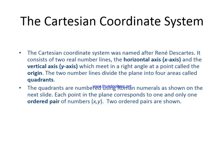The next topic is the Cartesian coordinate system, which was named after René Descartes. It consists of two real number lines: the horizontal axis is called the x-axis and the vertical axis is known as the y-axis, which meet at a right angle at a point called the origin. The two number lines divide the plane into four areas called quadrants.